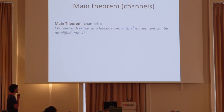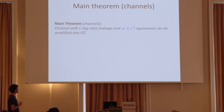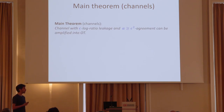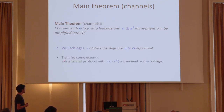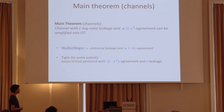Our main theorem for channels states that any channel with epsilon log-ratio leakage and agreement larger than epsilon squared can be amplified into OT. Comparing to Wullschleger: Wullschleger needed the leakage to be much smaller than the agreement, but here we allow the agreement to be much smaller than the leakage. This is tight in the sense that there exists a trivial protocol with C times epsilon squared agreement and epsilon leakage — so this is tight up to a constant. We also have a similar theorem for the computational variant of channels.